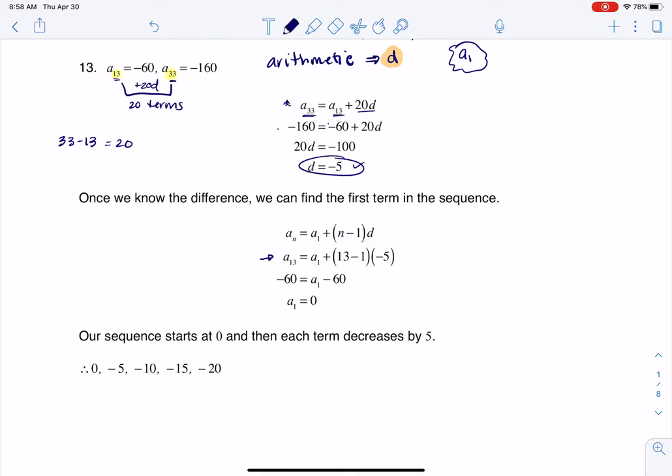And you see me subbing that in in the next step. I'm letting a sub n turn into a sub 13. You see me subbing in the 13 here and the d value. But I also happen to know a sub 13 is negative 60. And so when you wind up solving for that, you find out that your first term is 0.